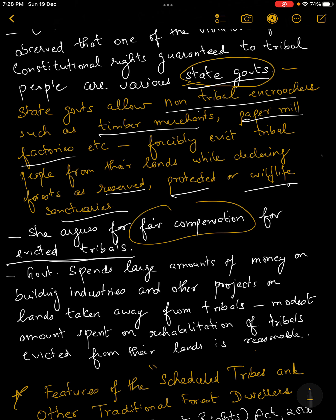Tribals who are evicted are not compensated fairly. The government actually spends a huge amount of money building industries and projects wherein forests are cut and new industries are set up on tribal land. The argument is: if all this money is being spent on building industries on tribal lands, then what is the problem in spending a modest amount on the rehabilitation of the tribals who are evicted? It is a very reasonable question that perhaps only our political masters can answer.